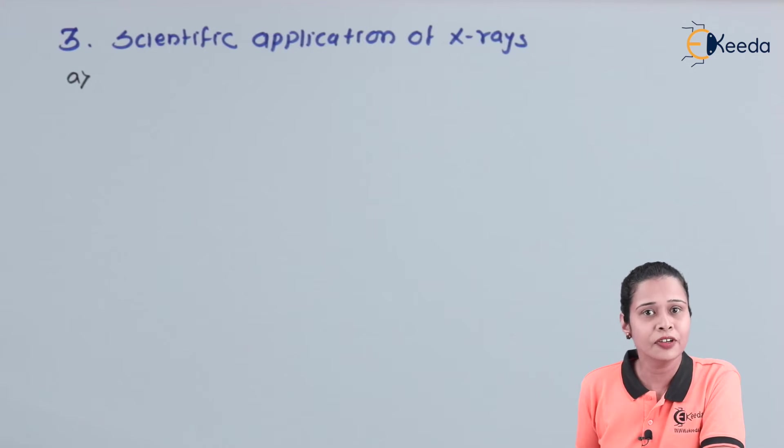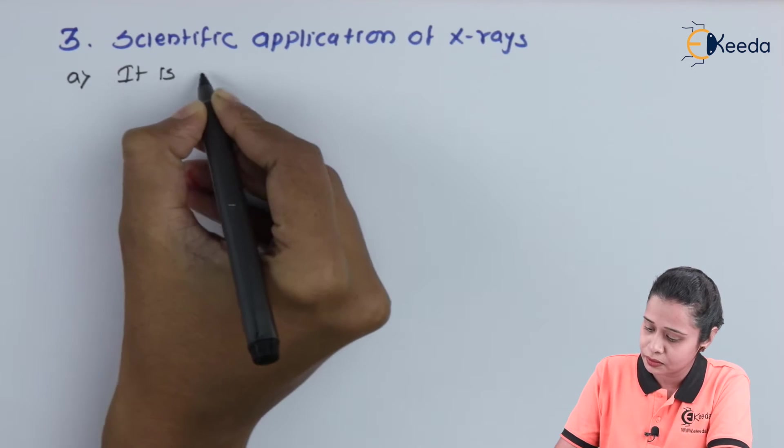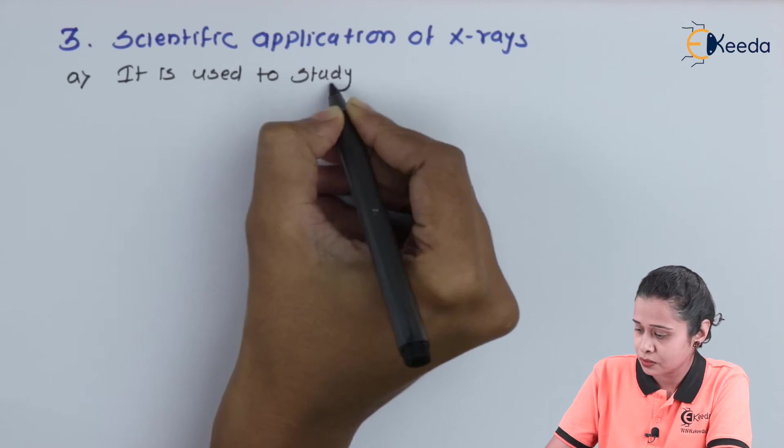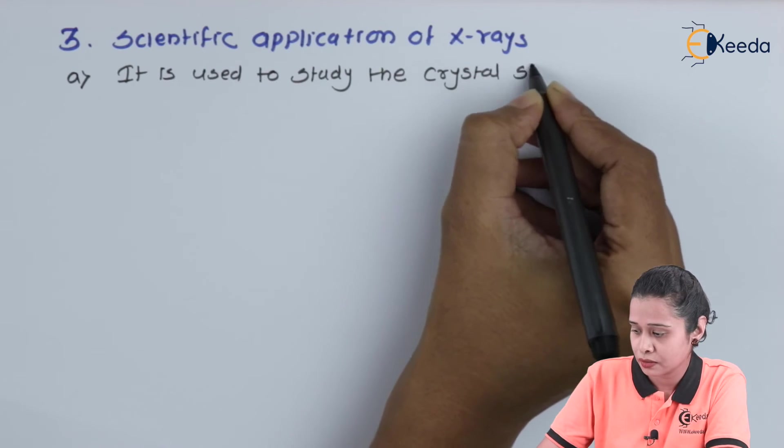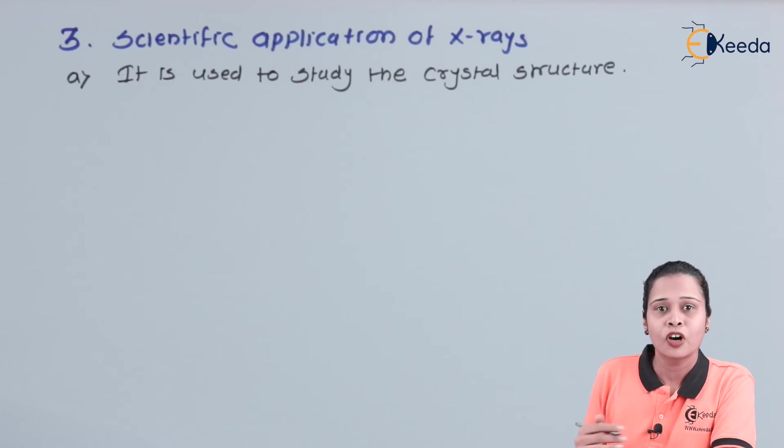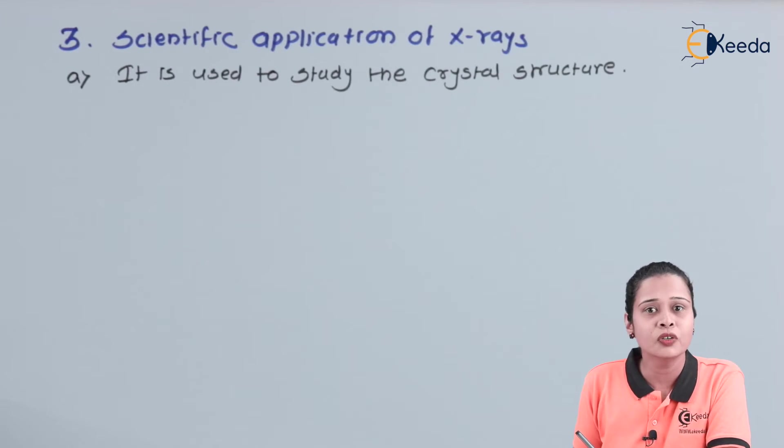In scientific field, X-rays are used to study the crystal structure. Let us see what are the scientific applications of X-rays. For studying the crystal structure, we are using method that is the Bragg's diffraction.